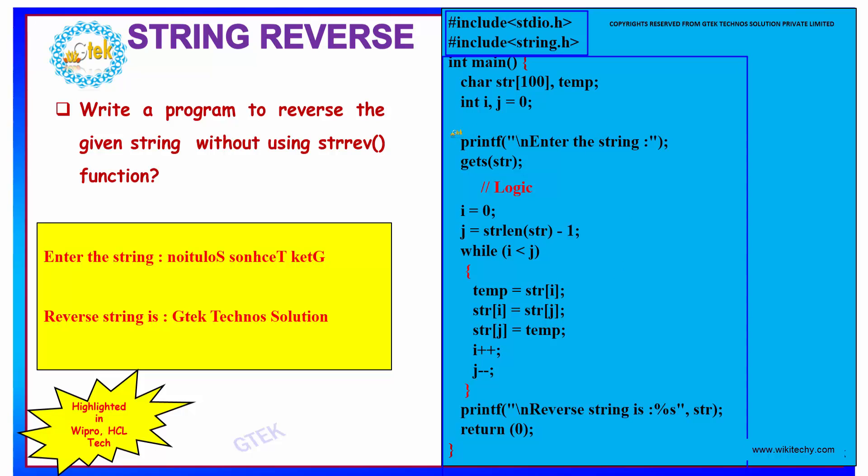Then we have to get the string from the user. That is done using enter string and we are getting the string. Further, we are assigning the value of i to be 0 and j is already initialized to 0 over here.